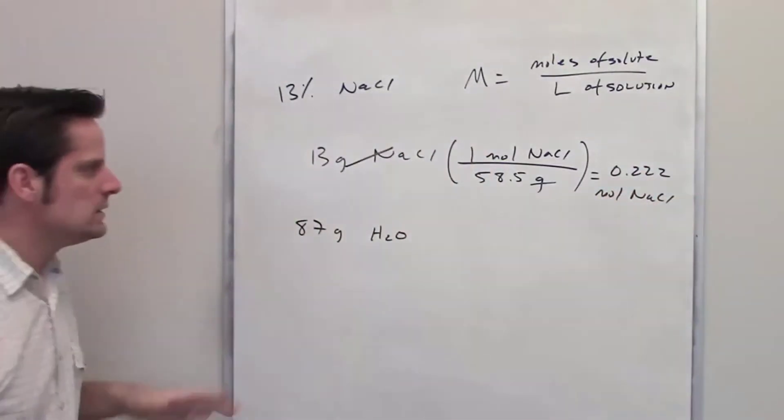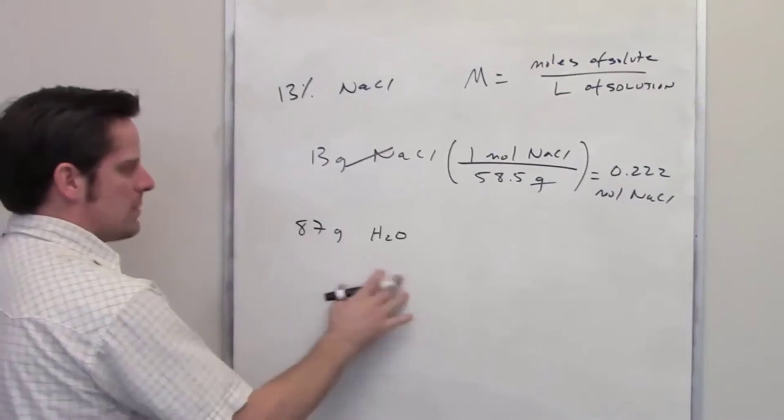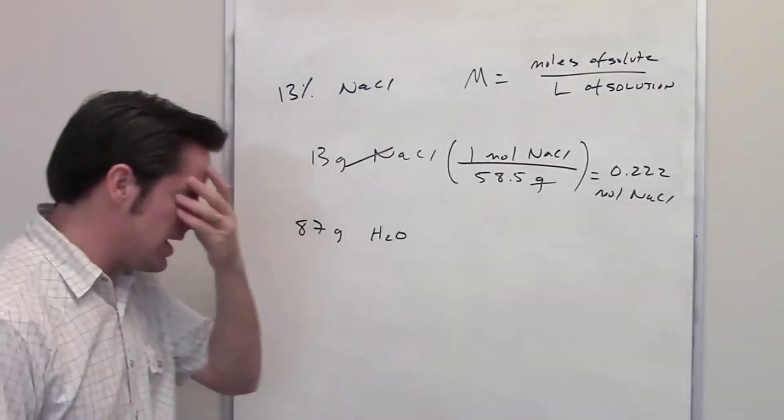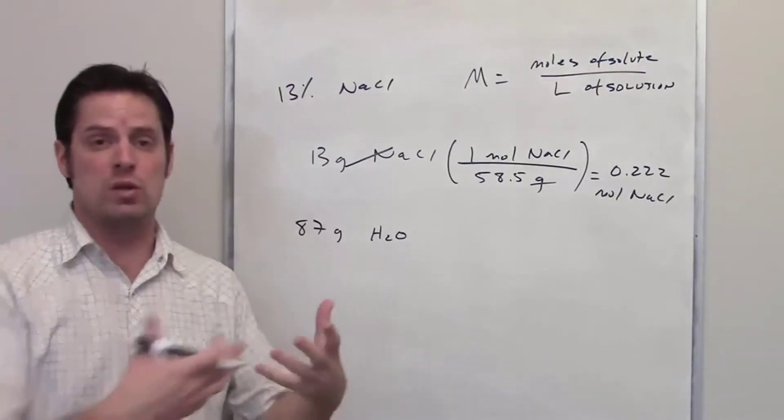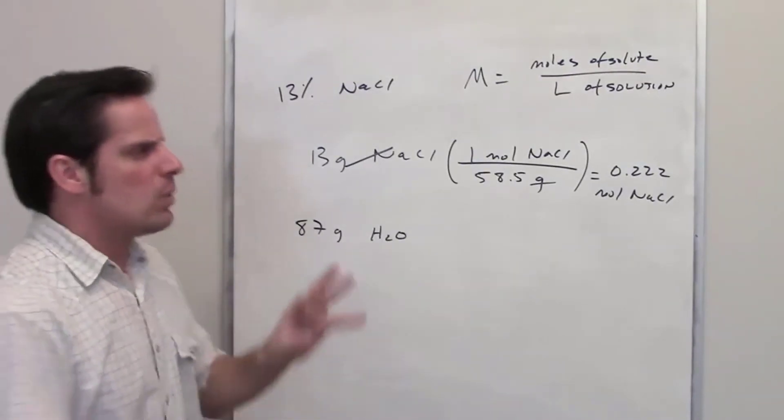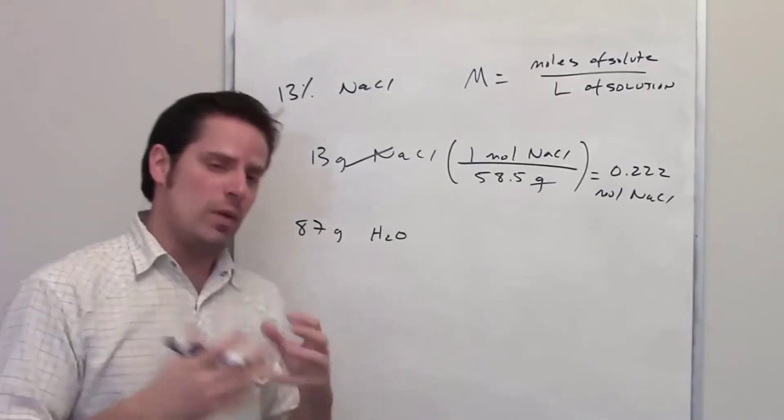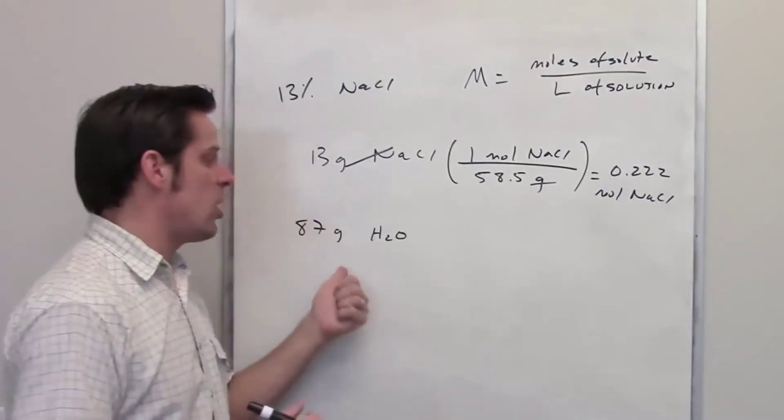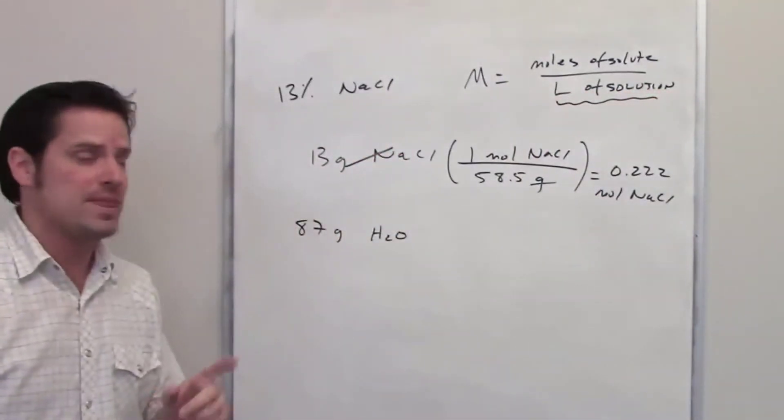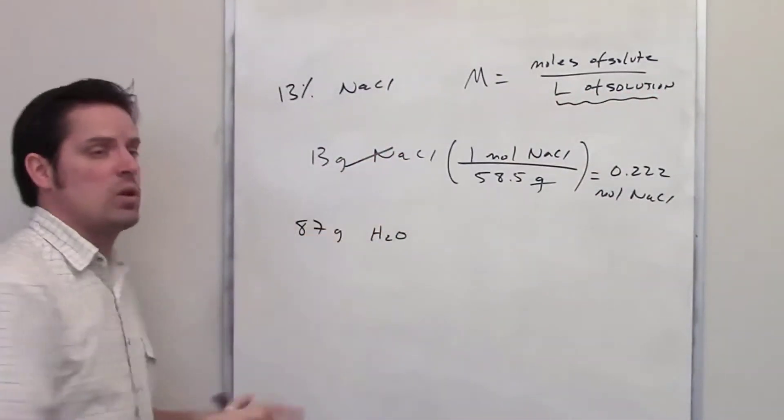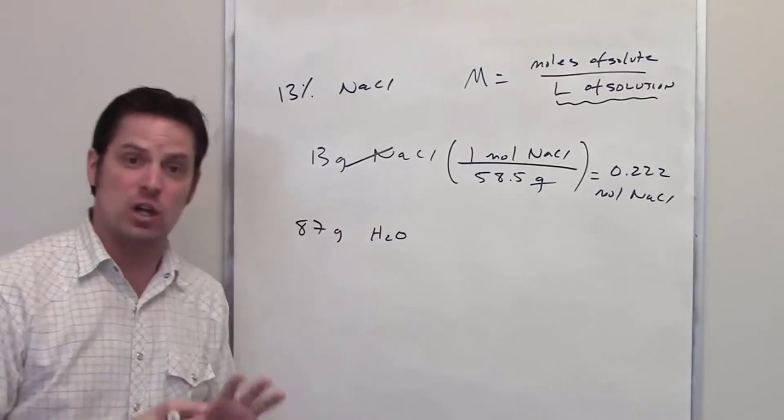Hopefully we're good there. Now, this 87 grams of water, we might be a little bit confused because you might think, well, I just have to determine how many liters 87 grams of water corresponds to. However, when determining molarity, we aren't just calculating liters of the solvent. We're calculating liters of the entire solution itself. That includes the sodium chloride, which presumably might increase the volume slightly.